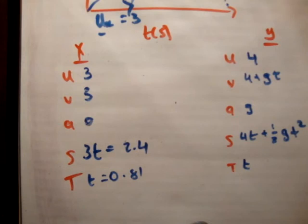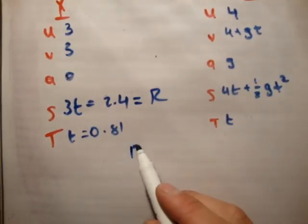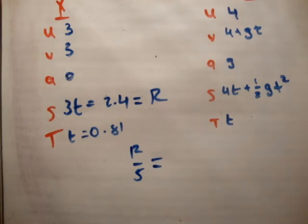So we need to find out what a fifth the range is because we're actually trying to find its vertical height at a fifth the range. So we know that the maximum range r is equal to 2.4. So r over 5 is equal to 2.4 over 5. And that's equal to 0.48.